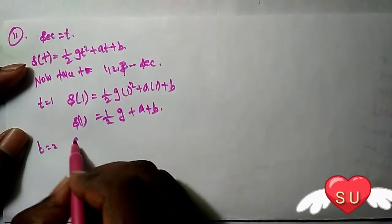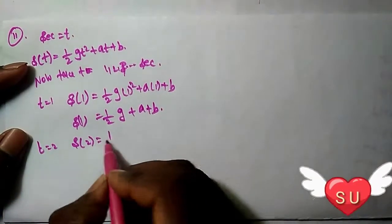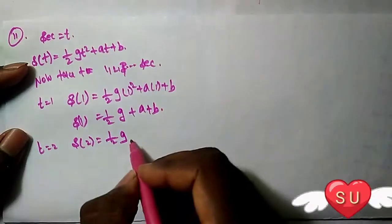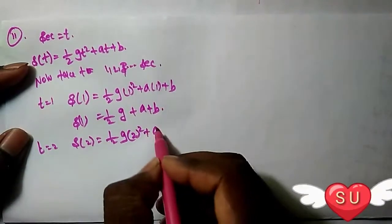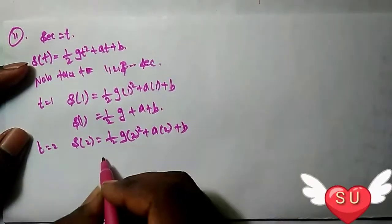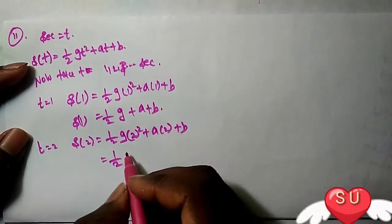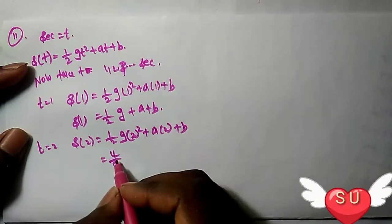For T = 2, S(2) = 1/2 g × 2² + a × 2 + b = 1/2 g × 4 + 2a + b = 2g + 2a + b.